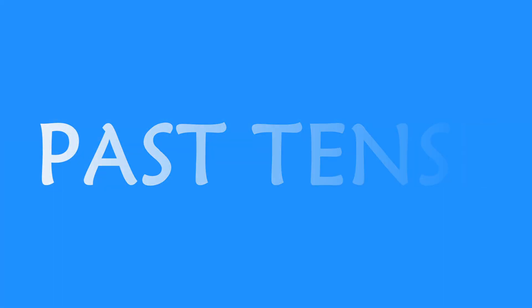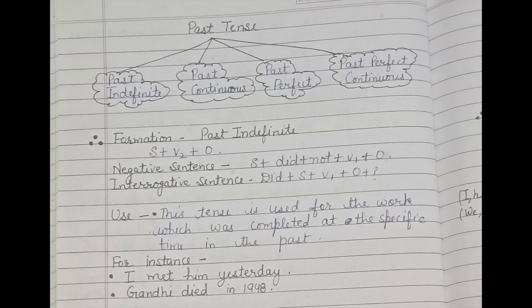Past tense is divided into four parts: past indefinite, past continuous, past perfect, and past perfect continuous. Past indefinite formation is subject plus V2 plus object. V2 means second form of the verb. In negative sentences, we use subject plus did plus not plus V1 plus object. In interrogative sentences, we use did plus subject plus V1 plus object plus question mark.